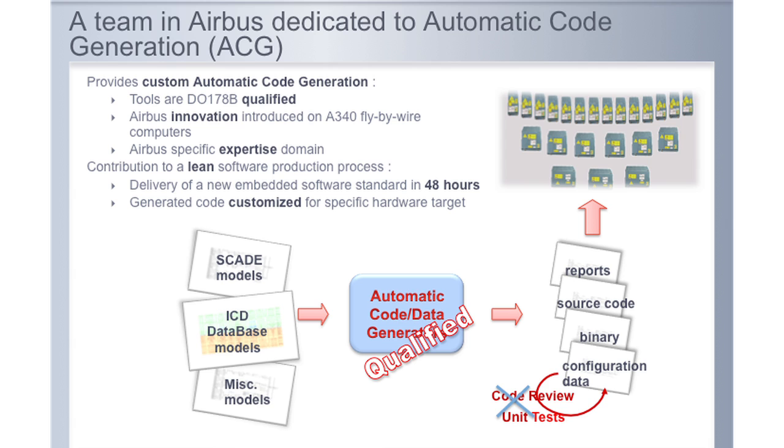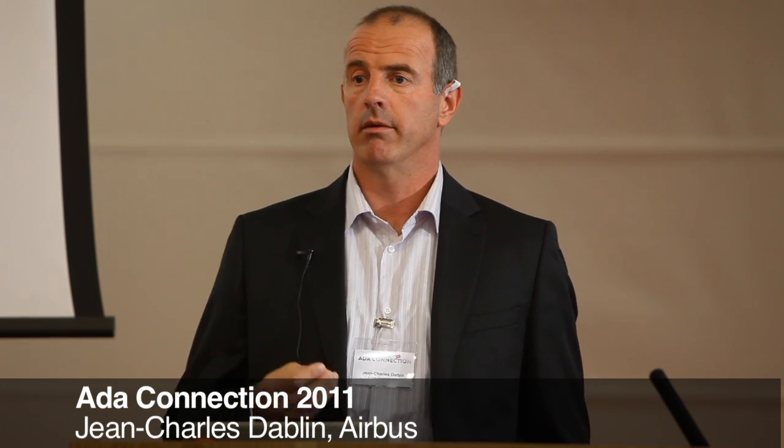This is a key innovation introduced during the A340 development. Automatic code generation allows us to produce code and avoid human error. Sometimes the amount of data to code by hand is not really possible in an industrial approach — for example, configuration data with a large volume of data cannot be written by hand. So we use automatic code generators.